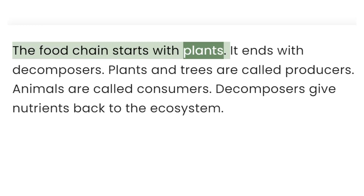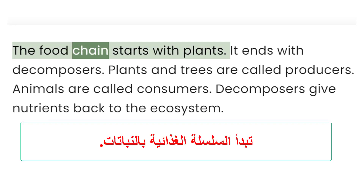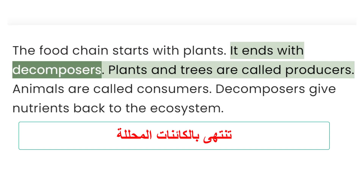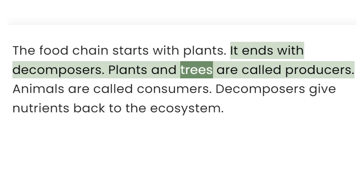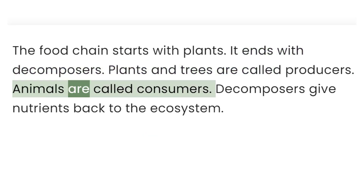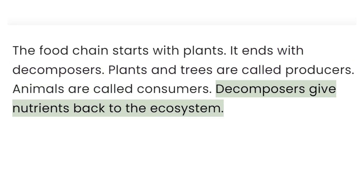The food chain starts with plants. It ends with decomposers. Plants and trees are called producers. Animals are called consumers. Decomposers give nutrients back to the ecosystem.